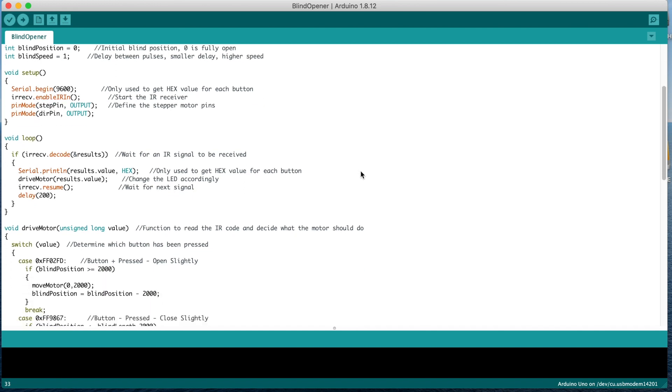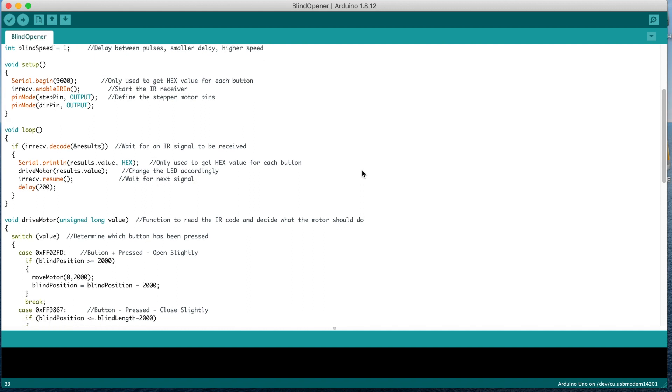The loop function waits for a signal to be received from the infrared remote, then displays it on the serial monitor. This can also be commented out after setup. The drive motor function is then called to drive the motor before waiting for the next infrared signal. The delay is just added for stability.